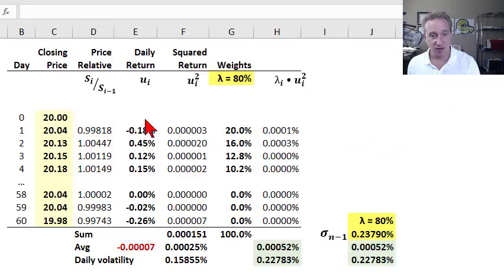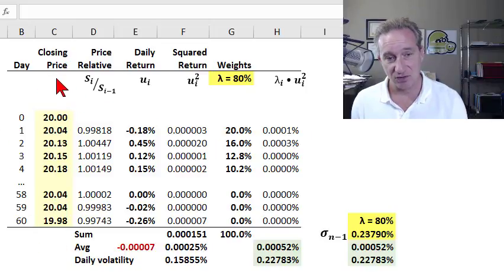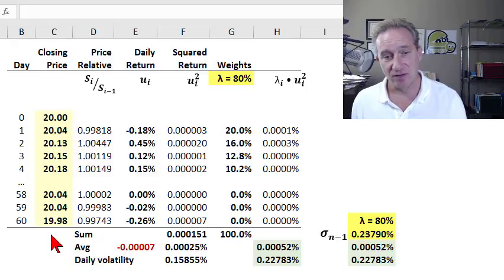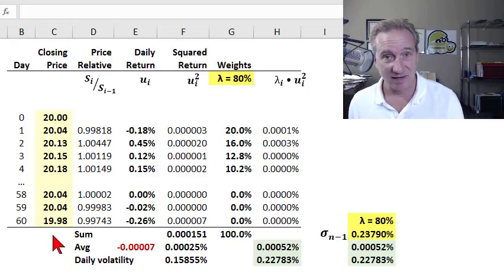It shares much in common with historical standard deviation. As before, we need a sequence or series of asset prices. After all, volatility is just a statistic based on a series of prices. In this case, I'm going back 60 days, maybe three months multiplied by 20 trading days per month.